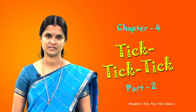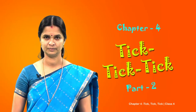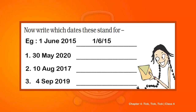Here are some more questions for you. You need to convert these dates into numbers. An example is given: 1st June 2015 is written as 1-6-15 because June is the sixth month. Next, convert 30th May 2020, then 10th August 2017, and finally 4th September 2019.